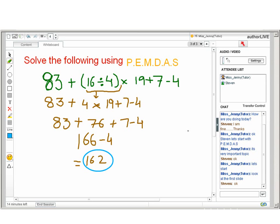Now look at this example. Here we have 83 + (16 ÷ 4) × 19 + 7 - 4, where 16 ÷ 4 is in parenthesis. So apply the PEMDAS rule and solve the operations within the parenthesis, and you will get 83 + 4 × 19 + 7 - 4.